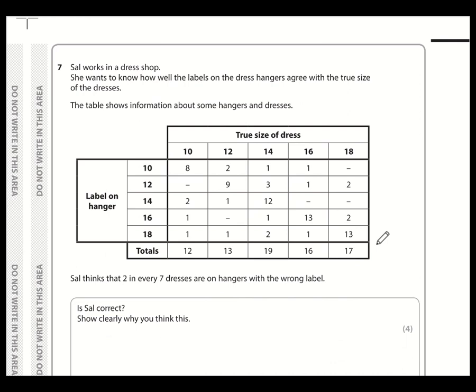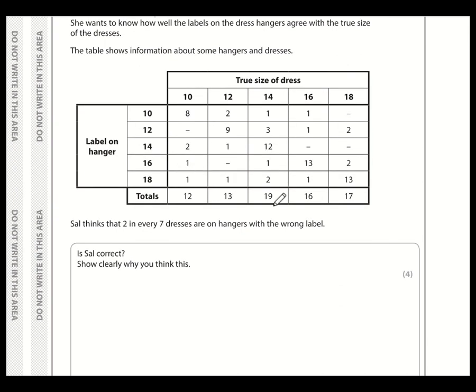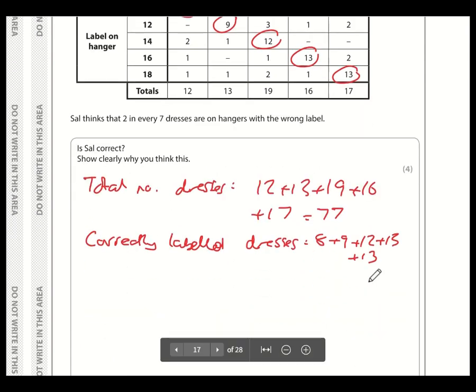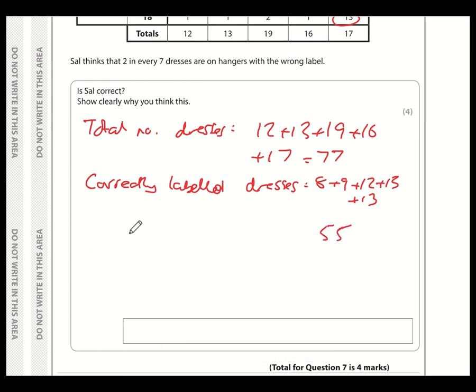Question number seven. So what we need to do here is work out, first of all, how many dresses are there in total? Well, the total is 12 plus 13 plus 19 plus 16 plus 17. So total number of dresses, 12 plus 13 plus 19 plus 16 plus 17. And that comes to the total of 77 dresses. So how many are on the correct hanger? Well, these ones, label says 10, it's 10. Label says 12, it's 12. So it was just going down this diagonal. So these are all the ones that are correctly labeled. So the correctly labeled dresses is 8 plus 9 plus 12 plus 13 plus 13. And that comes to 55.